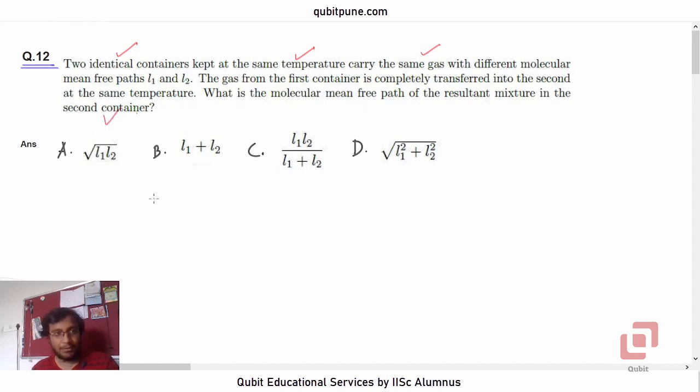We have four options: root L1L2, L1 plus L2, L1L2 upon L1 plus L2, and root of L1 squared plus L2 squared.